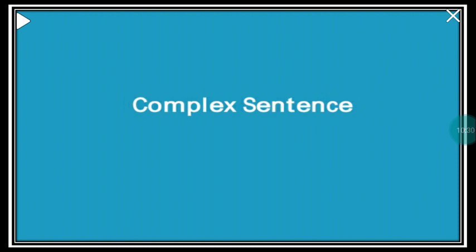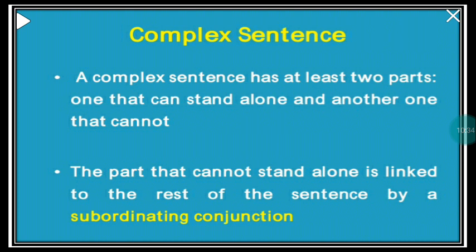Now we go to the third kind of sentence — the complex sentence. A complex sentence has at least two parts: one that can stand alone, called an independent clause, and another part that cannot stand alone, called the dependent clause. The part that cannot stand alone is linked to the rest of the sentence by a subordinating conjunction. A complex sentence consists of one main clause and one or more subordinate clauses.